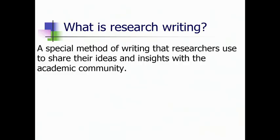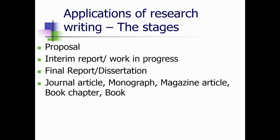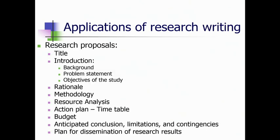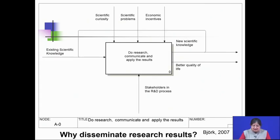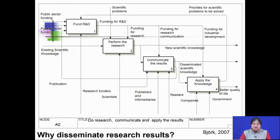Let us see what we discussed through the course of the 4 weeks. We started off talking about research writing — what research writing was, the applications of research writing, the different stages. Then we discussed why it is important to disseminate research, including diagrams from Bjork's paper detailing why it is important to disseminate research results and what the impacts of dissemination are.